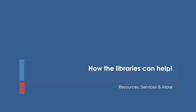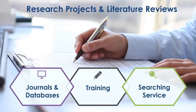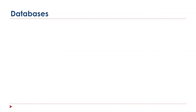Now that we've covered the basics, here's how the libraries can help you. If you're working on research projects and literature reviews, you'll have to search databases for journal articles. If you're new to this, you can attend one of our trainings or have a librarian do it for you. I'll go over a selection of databases relevant to the health sciences field that you might encounter, and you have access to the McGill and MUHC versions of these databases via our website.